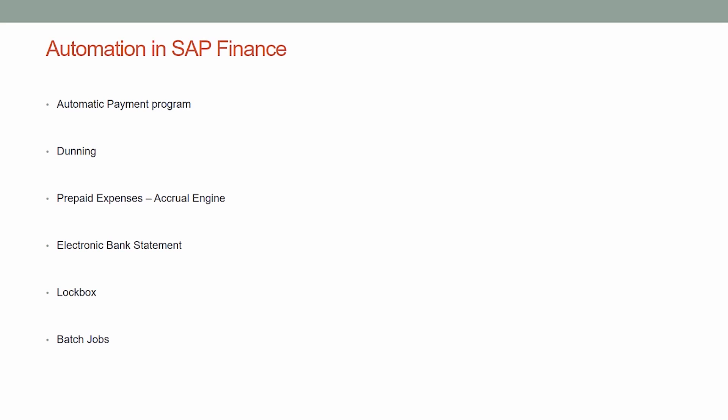Once Lockbox is implemented, checks go directly to the bank. The bank creates an electronic file of the checks received, which is electronically transmitted to and uploaded in SAP. It credits the customer's account and debits the bank check clearing account. When the Electronic Bank Statement arrives, it updates these check clearing accounts. We will go into more detail on Lockbox automation in later sections.